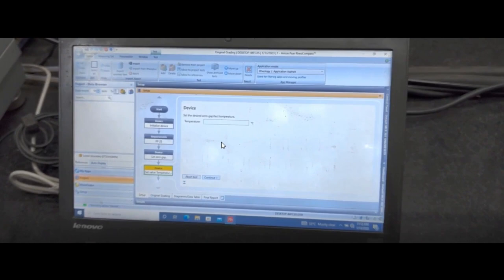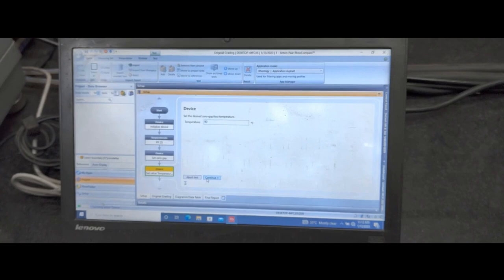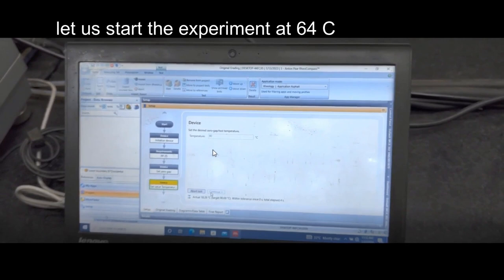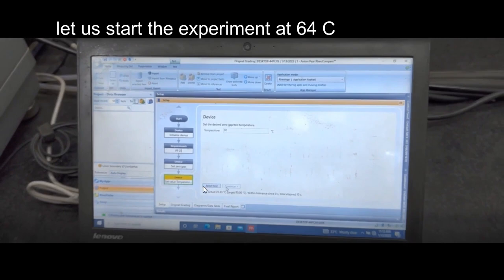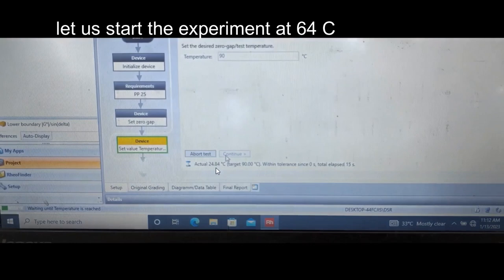Now let us say you choose a temperature of 64 degrees Celsius and then start the experiment. The DSR will bring the specimen to test temperature. Here you can see the temperature is 25 degrees Celsius, so it will take time to reach 64 degrees Celsius.